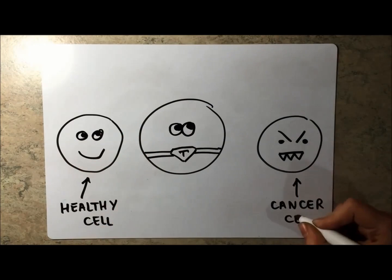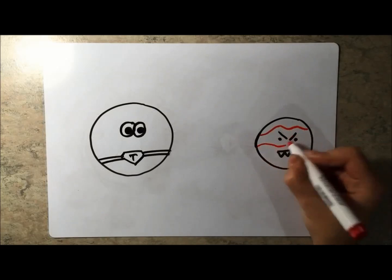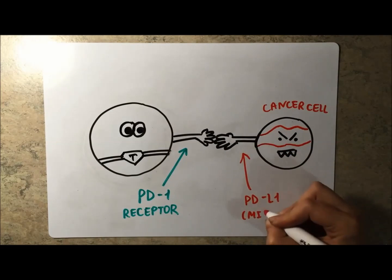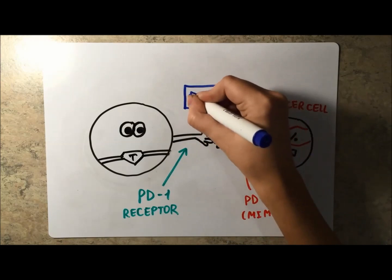In a perfect world, T cells would be able to differentiate healthy cells from unhealthy cells. However, in the body, cancer cells are sneaky. They have PD-L1 proteins on their cell surfaces in order to mimic healthy cells, which provides them with a camouflage from T cells and so they successfully escape.